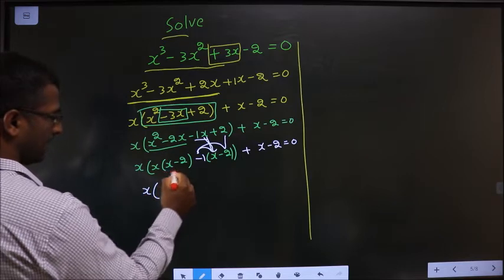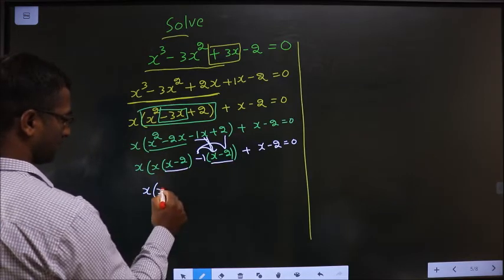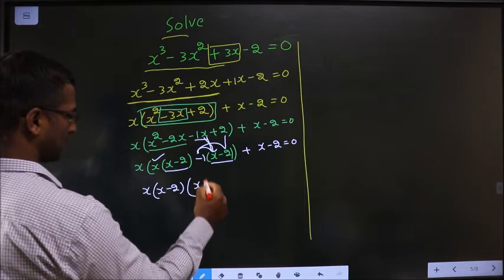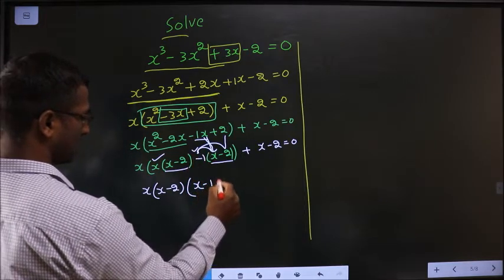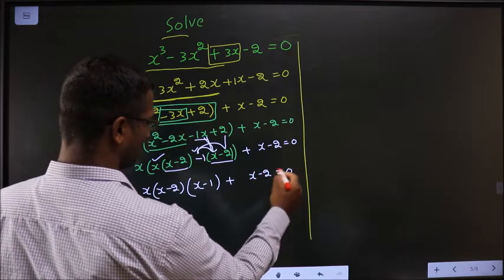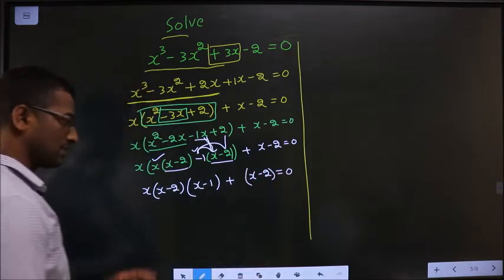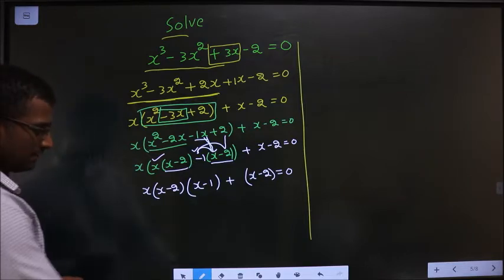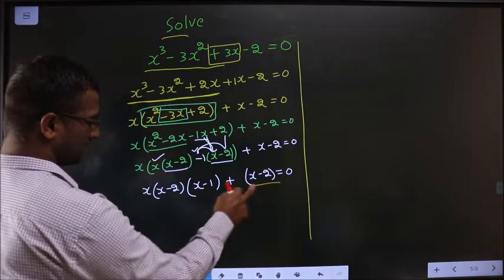Take x minus 2 common. So here I am left with x and minus 1 plus x minus 2 equal to 0. What will you take common from this entire thing? x minus 2.